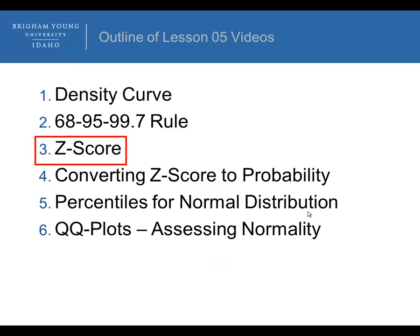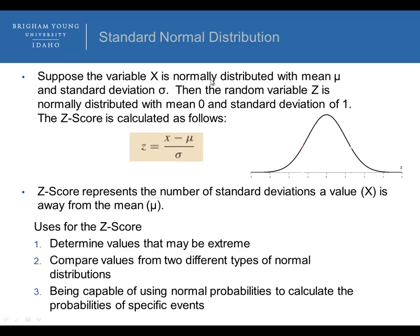Now let's talk about a Z-score. Suppose a variable x is normally distributed with a mean of mu and a standard deviation of sigma. The random variable z is normally distributed with a mean of 0 and a standard deviation of 1. The Z-score is calculated as z = (x − mu) / sigma. The Z-score represents the number of standard deviations a value x is away from the mean. There are three uses for the Z-score: determining extreme values, comparing values from two different normal distributions, and calculating probabilities of specific events.